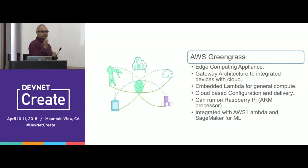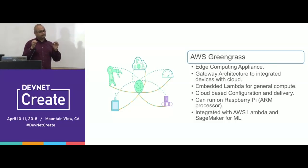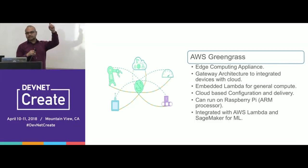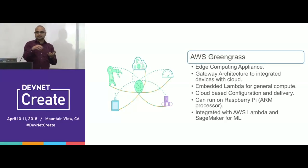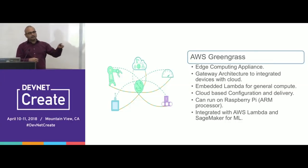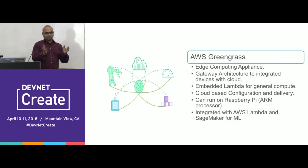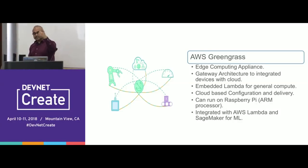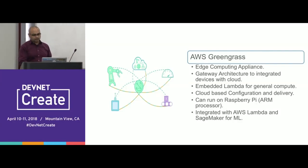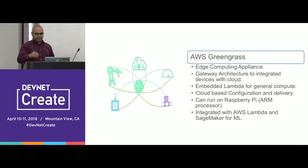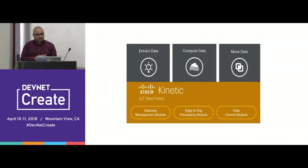AWS Greengrass is designed for edge computing — it's an extension to Lambda. You deploy this piece of software closer to your environment, integrate your devices with the Greengrass interface, process your data based on your needs, and it is also a gateway to Lambda. So you can process what you need there and move data to the cloud for deeper processing.